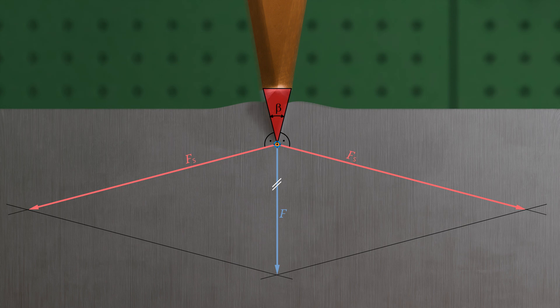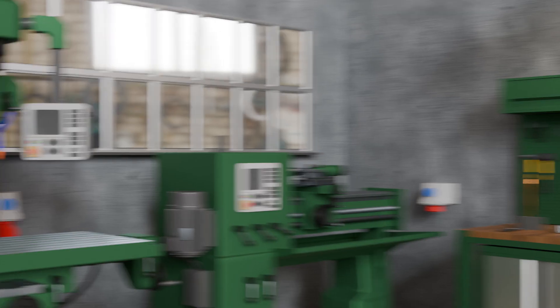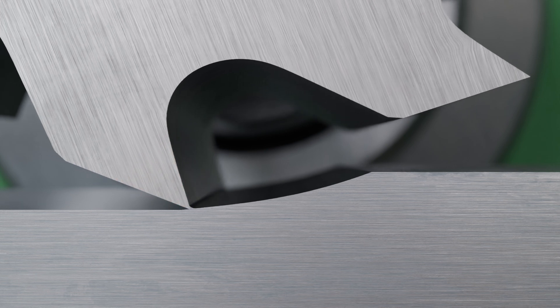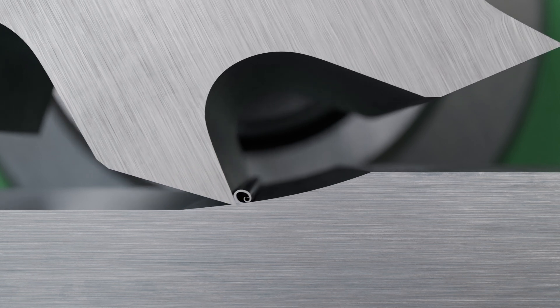If the cutting wedge is no longer applied perpendicularly to the workpiece surface, but instead guided at a shallow angle as in milling, the workpiece is no longer separated as a whole, but one chip is removed after another.